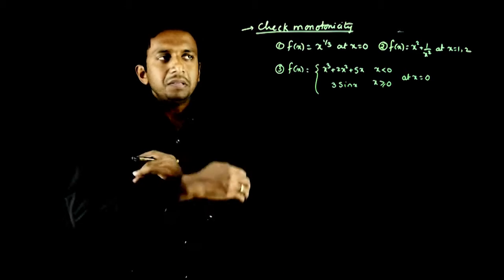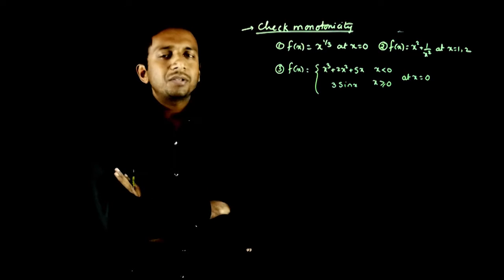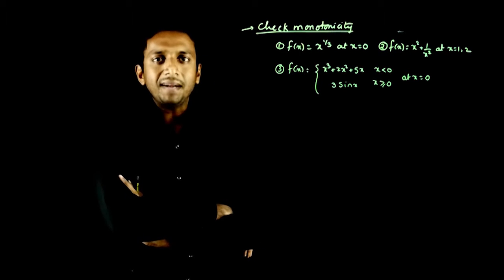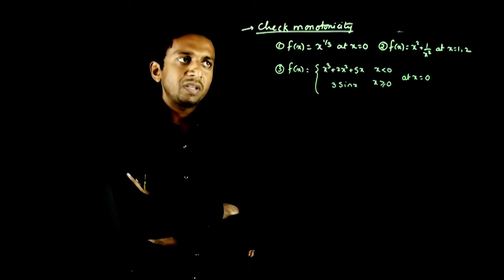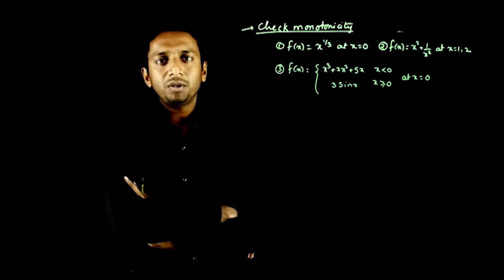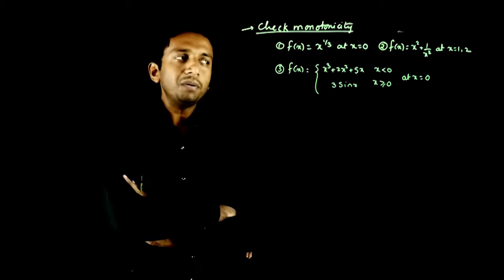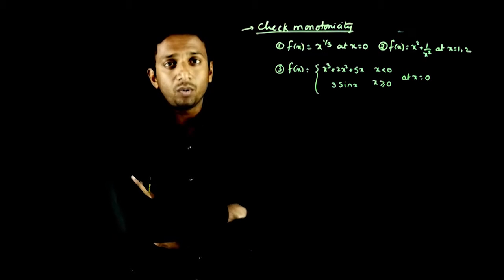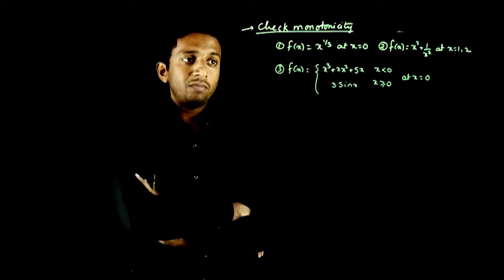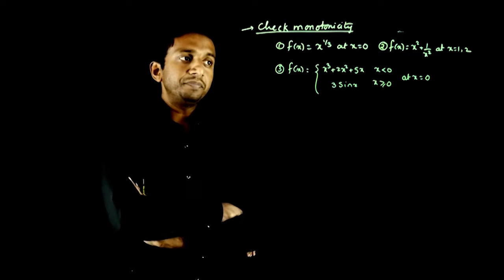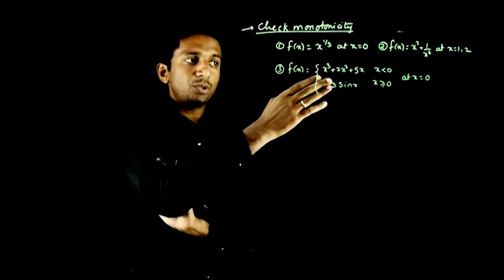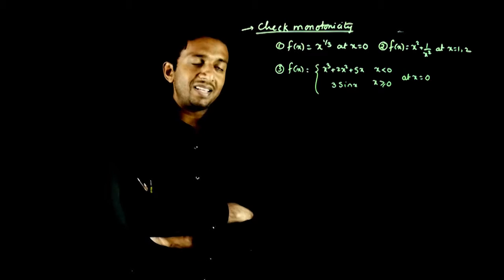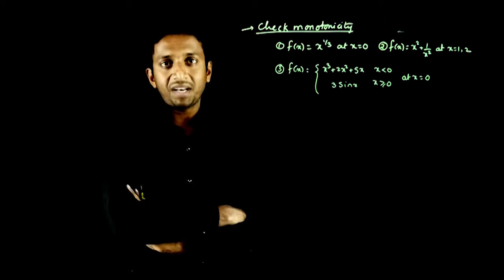Welcome students. This question asks you to check the monotonicity of the given functions at some given points. First: f(x) = cube root of x at x = 0. Second: f(x) = x² + 1/x² at x = 1 or 2. Third: f(x) = x³ + 2x² + 5x when x < 0, and 3 sin x when x ≥ 0.